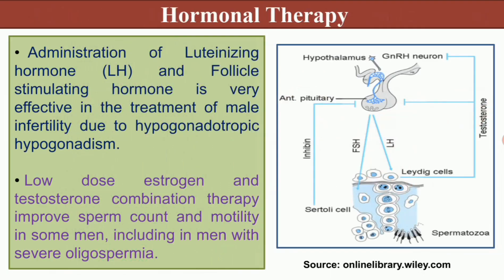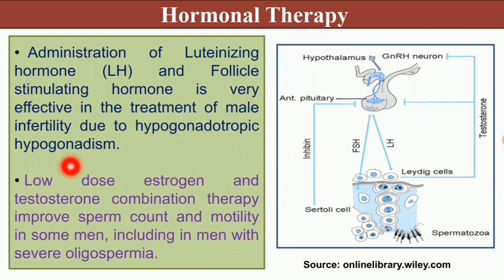Under hormonal therapy, administration of LH or FSH — the two gonadal hormones — is very effective in the treatment of male infertility due to hypogonadotropic hypogonadism. Low-dose estrogen and testosterone combination therapy improves sperm count and motility in some men, including those with severe oligospermia. Hormonal therapy involves introducing hormones to increase the rate of fertilization.